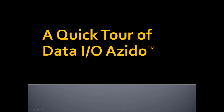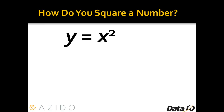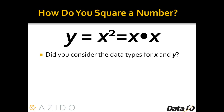Hello and welcome to a quick tour of DataIO Azito. How do you square a number? Well, generally you just put the exponent 2 above it, but in reality you typically multiply the number by itself. Now when you did this, did you consider the data types for x and y?